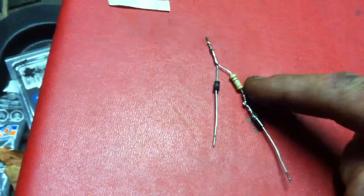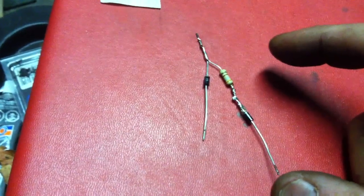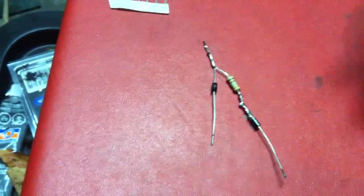If you want a bigger difference between the regular tail light and the brake light, you just add another resistor. I guess you could add a higher ohm resistor.